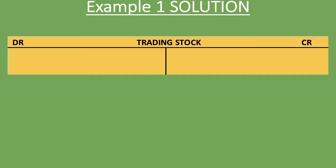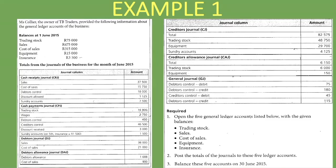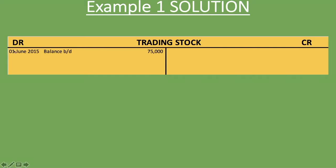If you'd like a tip on remembering debits and credits, there's another short lesson with an acronym in the description below. Going back to the question: the balance at 1st June 2015 for trading stock is 75,000 rand. We put the date 1st June 2015, write 'balance brought down,' and record 75,000 rand on the debit side because trading stock is an asset and assets are recorded on the debit side.